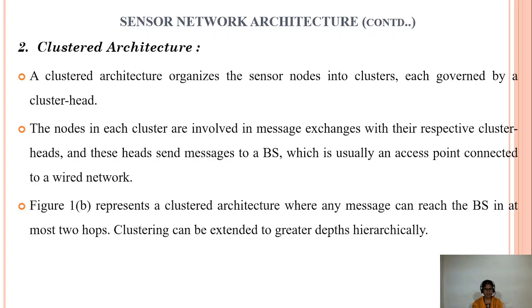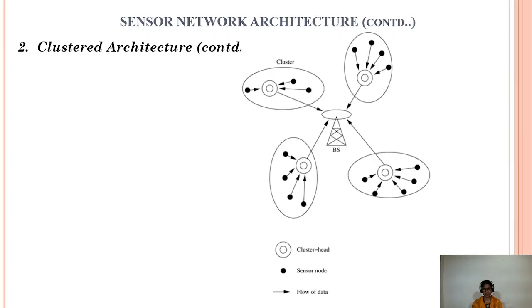The second type of architecture is clustered architecture, which organizes sensor nodes into clusters. Sensor nodes are grouped together to form clusters, and each cluster has a cluster head. Nodes within a cluster exchange messages only with their respective cluster heads. Cluster nodes send information to the cluster head, and cluster heads send that information to the base station, reaching the base station in at most two hops. Clustering can be extended to greater depths of hierarchy.